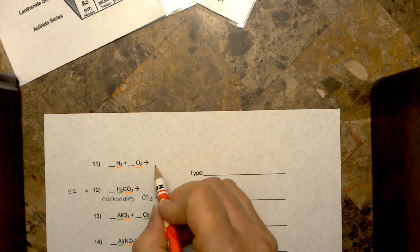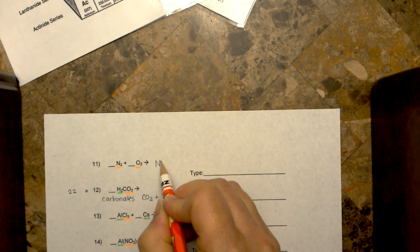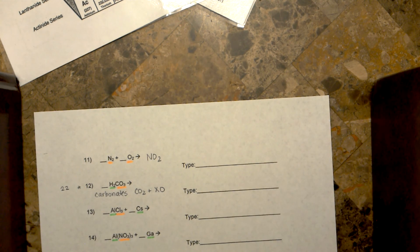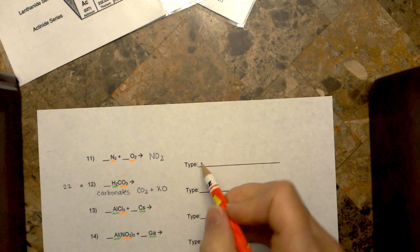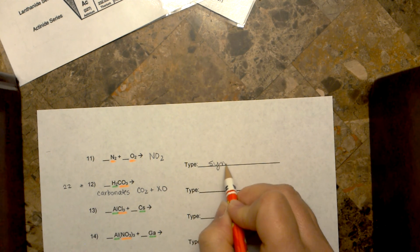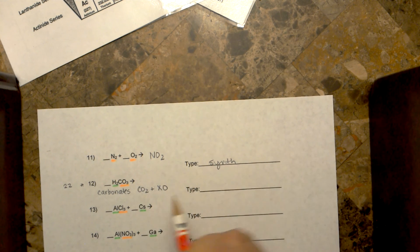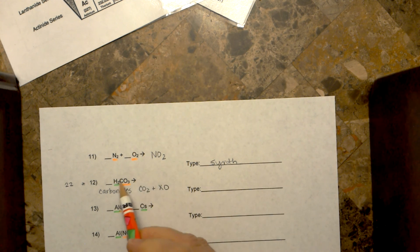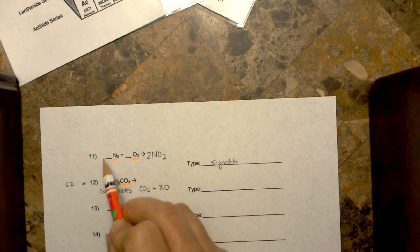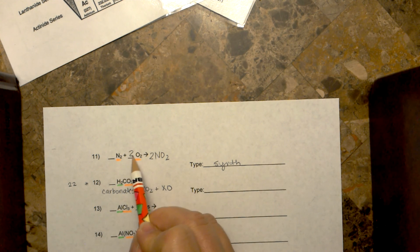This is a synthesis. You would have to be told whether this is NO₂ — nitrogen monoxide or nitrogen dioxide. In this case it's nitrogen dioxide. It's a synthesis, and so it would create NO₂. Then you can balance it accordingly.